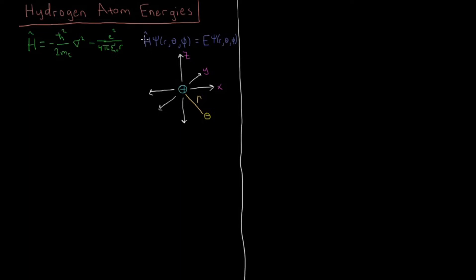And we want to solve the Schrödinger equation H psi equals E psi for psi, which depends on the spherical polar coordinates r, theta, and phi. So let's just go ahead and skip to the spoilers and say what the energy levels end up being.